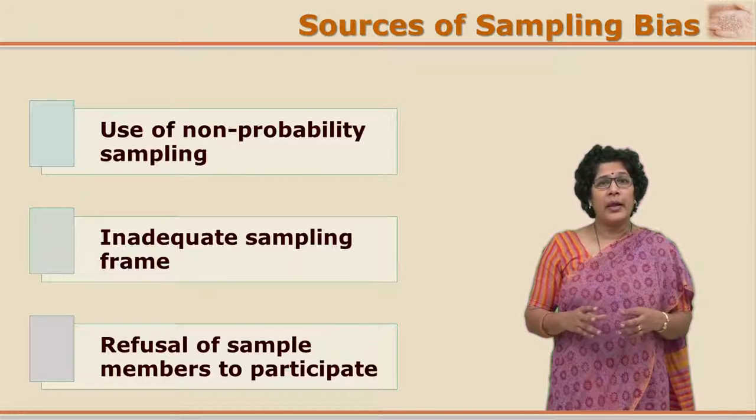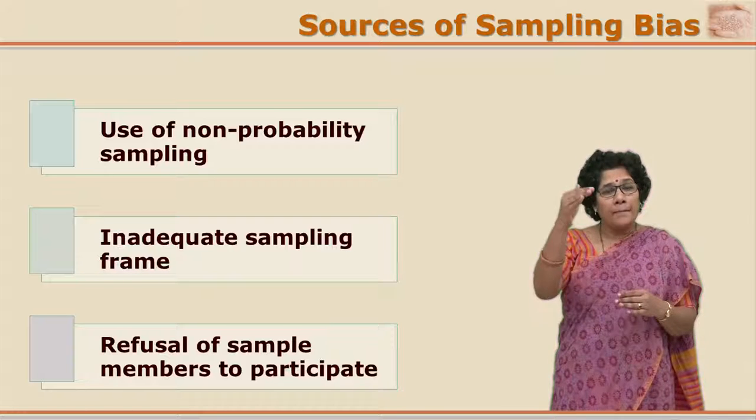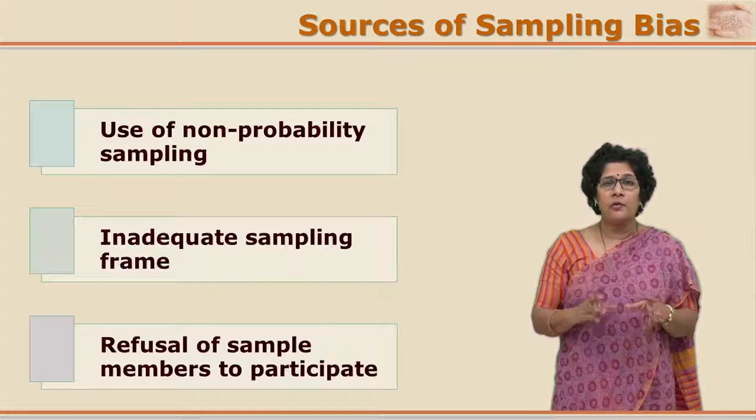Another source for sampling bias is an inadequate sampling frame. One needs a complete list of the members of the population from which the sample is to be selected. For example, if one has to select 7 students from a class of 50, but the information of only 40 students is available, those 10 whose information is not available have already lost the chance to be selected. If the sampling frame is incomplete or inadequate, it gives rise to sampling bias.